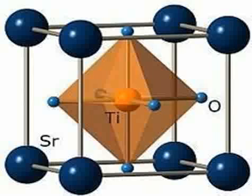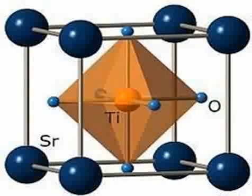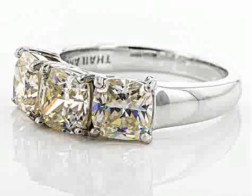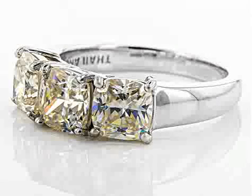This makes strontium titanate a quantum paraelectric. It was long thought to be a wholly artificial material, until 1982 when its natural counterpart, discovered in Siberia and named tausonite, was recognized by the IMA. Tausonite remains an extremely rare mineral in nature, occurring as very tiny crystals.